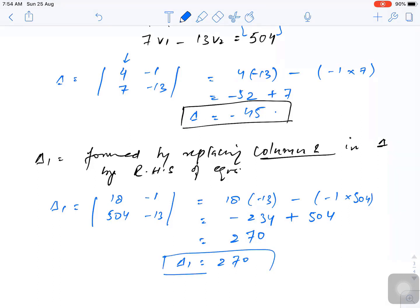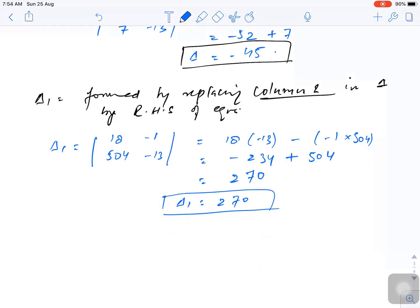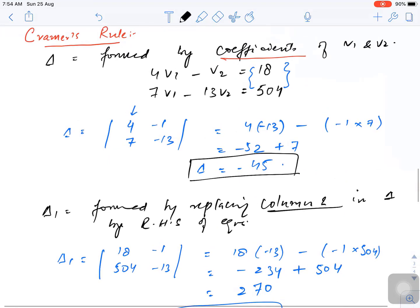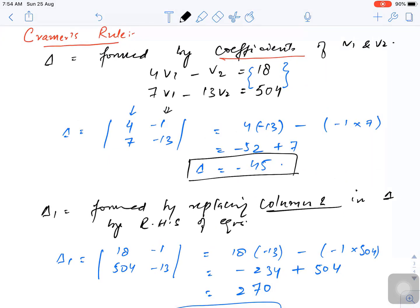Now similarly, what is delta 2? Delta 2 is formed by replacing column 2 in delta by the right hand side. So we are going to replace this column now.